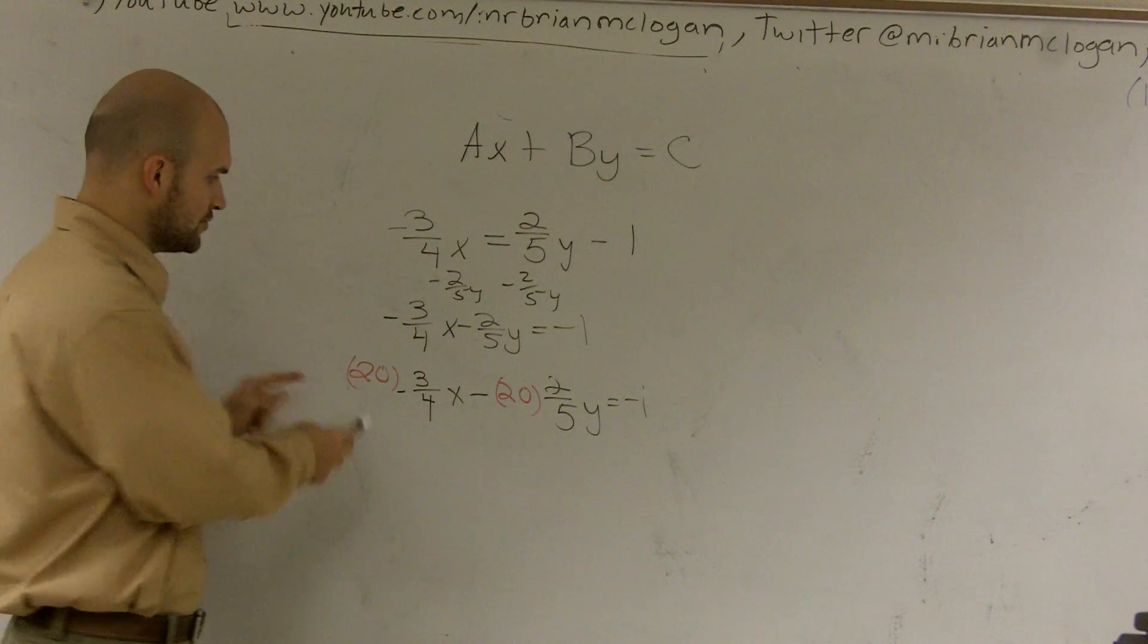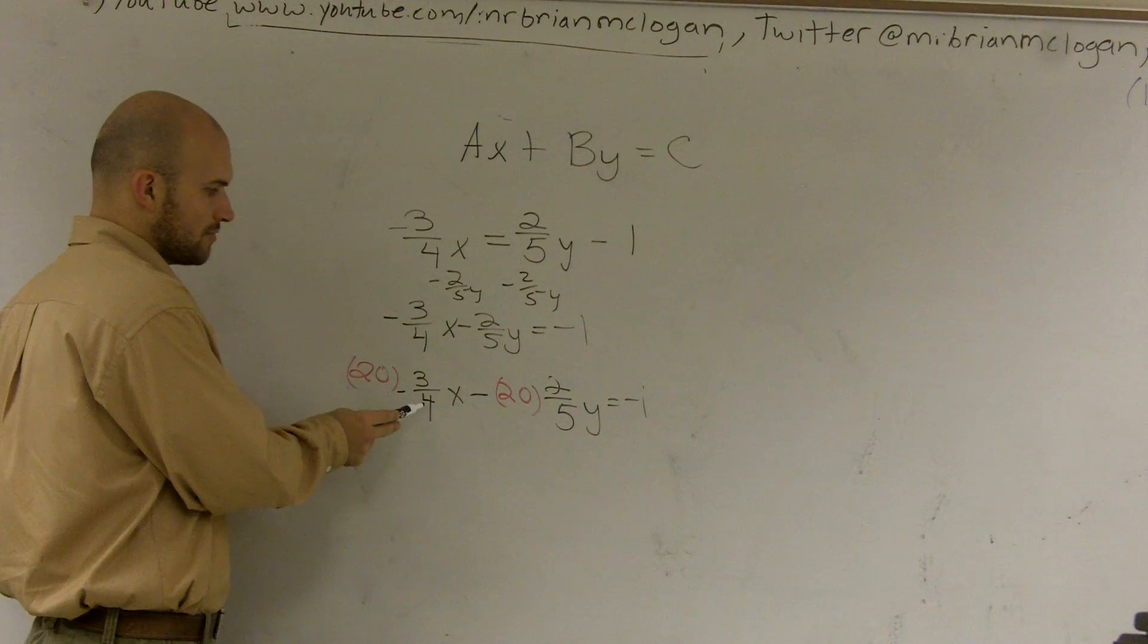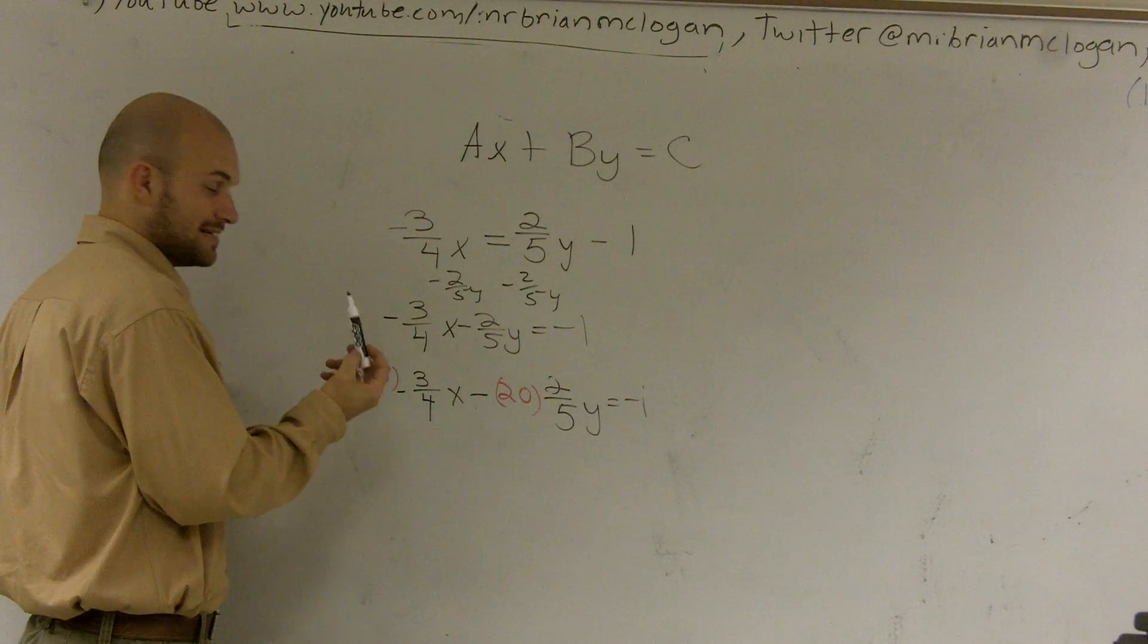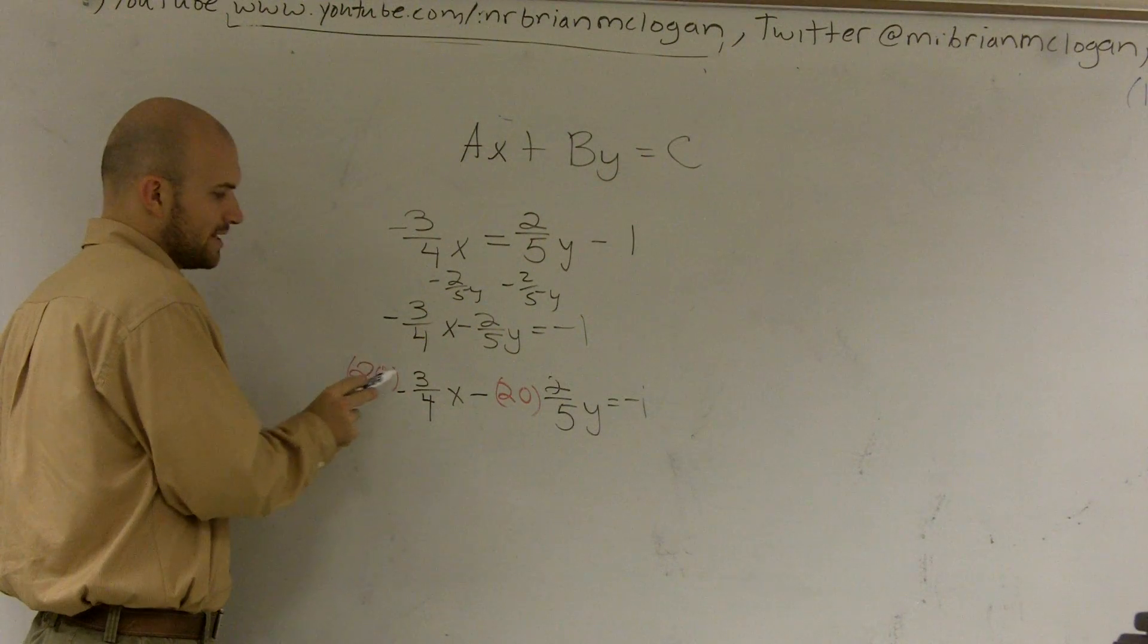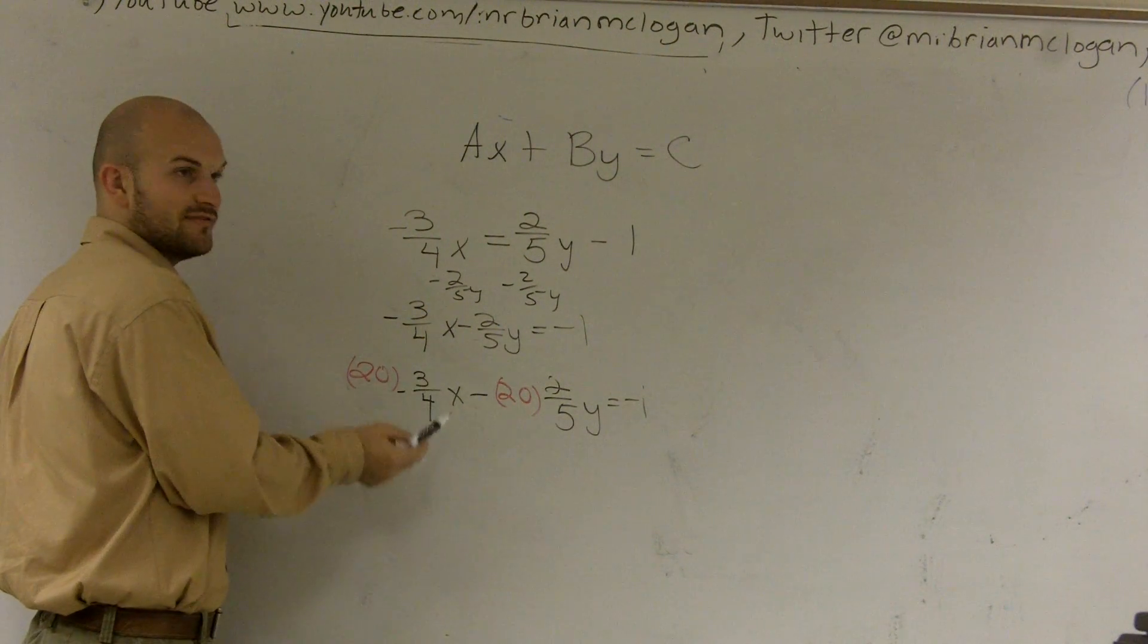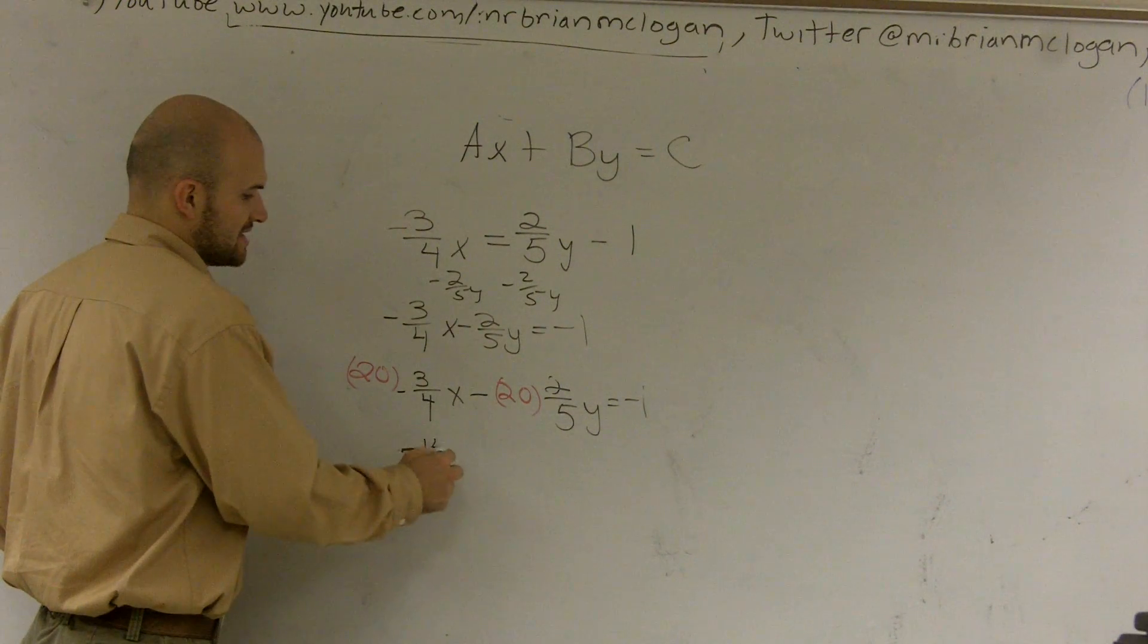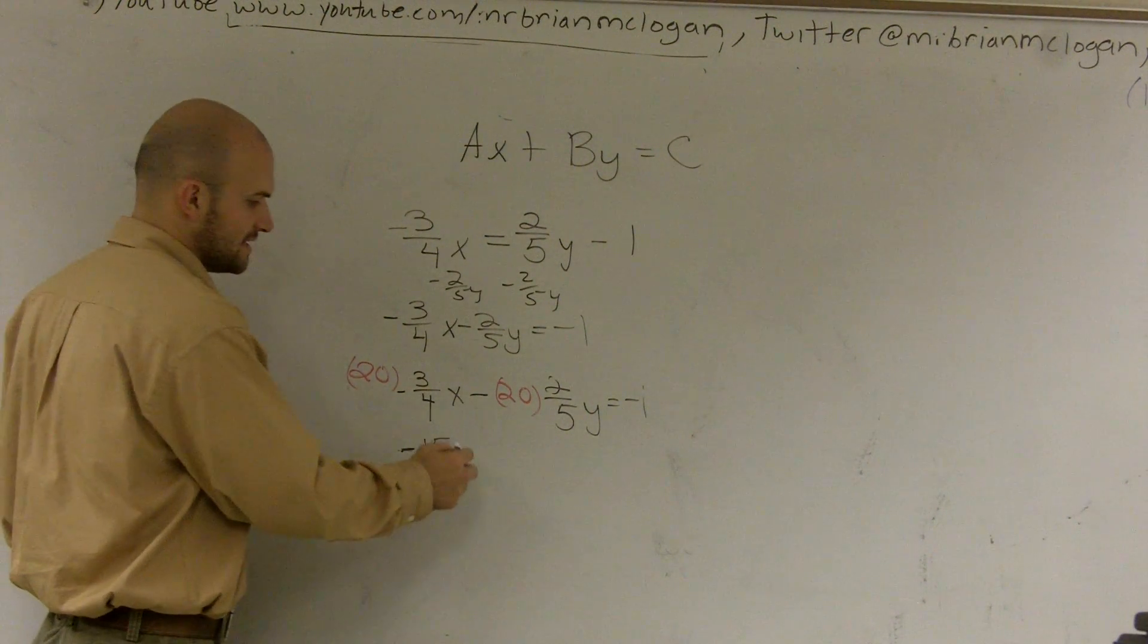So here there's a couple ways you could do this. You could divide 20 divided by 4, which would be 5, and then multiply that by 3 to get 15. Or you could multiply 20 times 3 to give you 60, divide by 4, and either way you're going to get 15. But since there's all that negative sign there, it's going to be a negative 15.